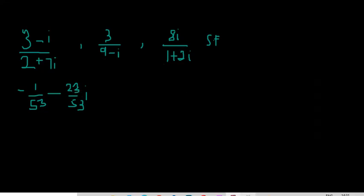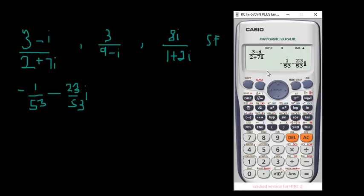Let's try the second one: 3 / (9 - i). Enter 3 divided by (9 - i) and calculate.